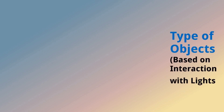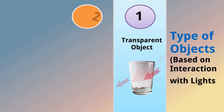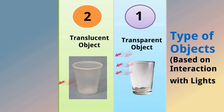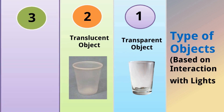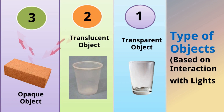Now let us look at types of objects based on interaction with light. First, glass — light passes through it, so transmission happens and it is known as a transparent object. Second, plastic — some light is absorbed and some reflected, so this is a translucent object. Third, an opaque object — light falls on it but does not pass through; it is absorbed or reflected. So: transparent means light passes through completely, translucent means light passes through partially, and opaque means light does not pass through.